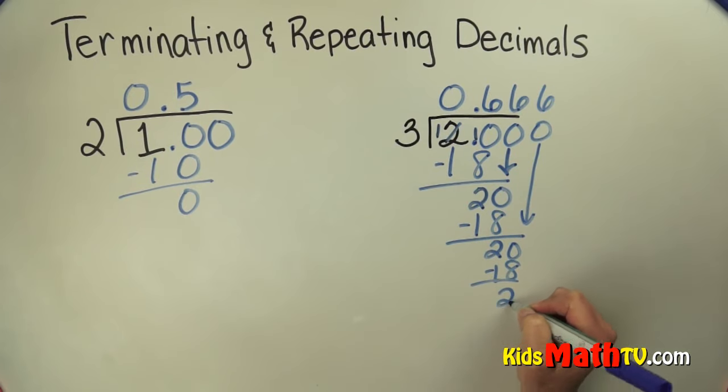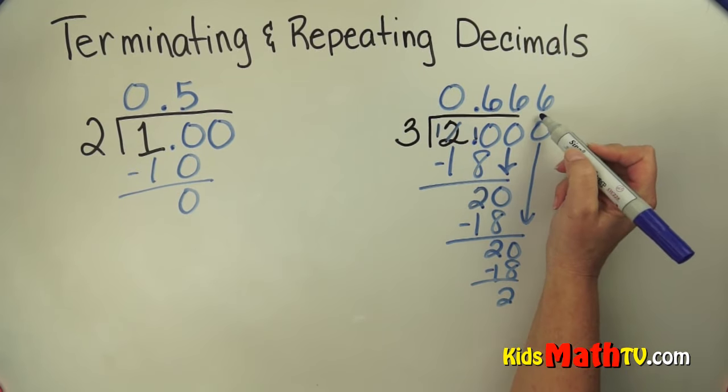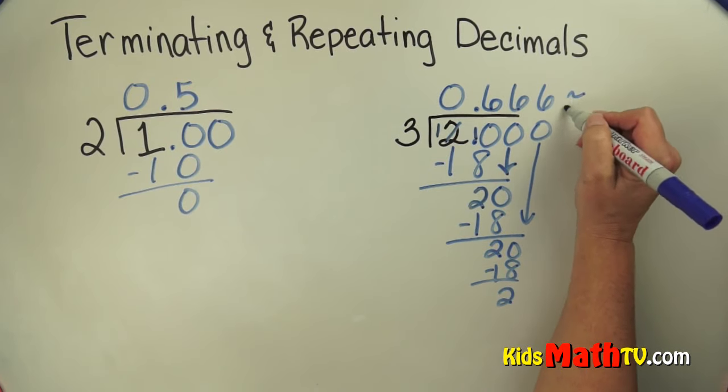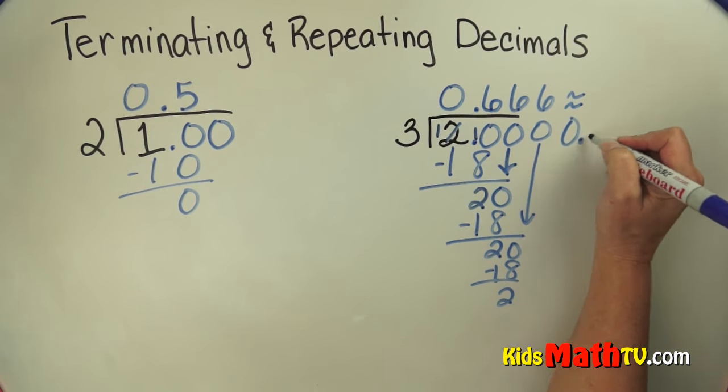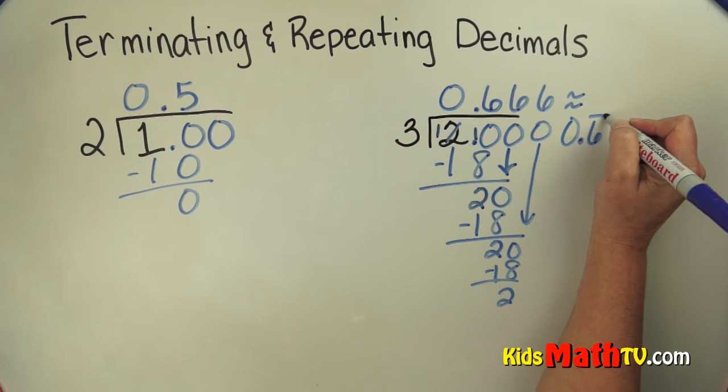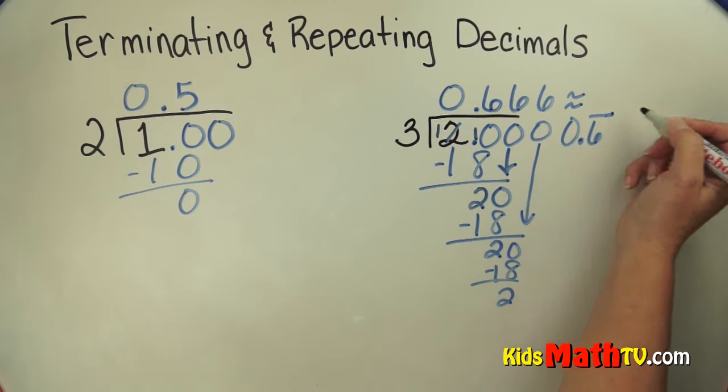18 subtract 0. So I'm going to actually round this. I can round it to either 0 and 6 with the line over it. And that tells me that it's repeating.